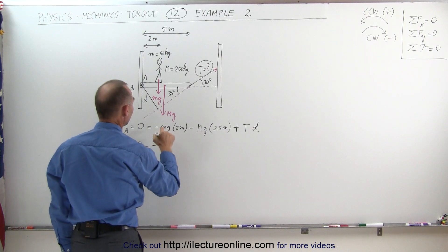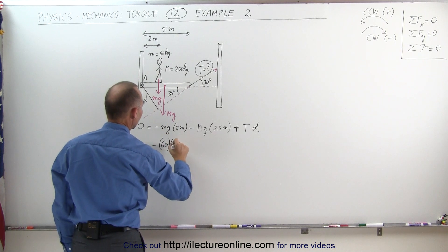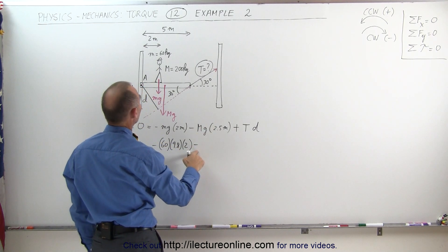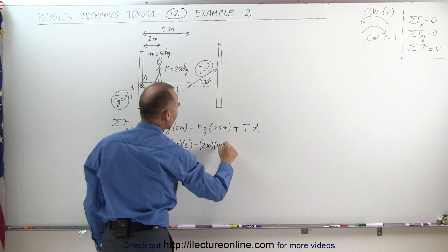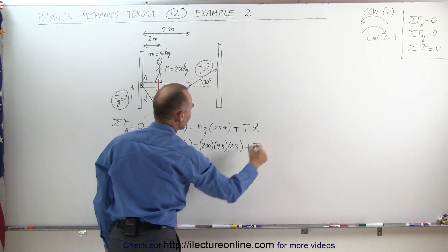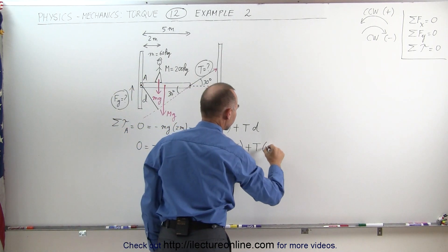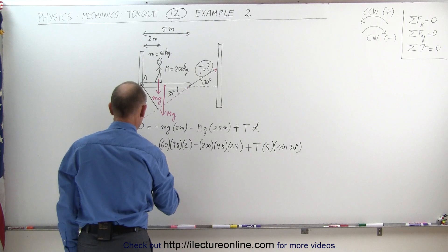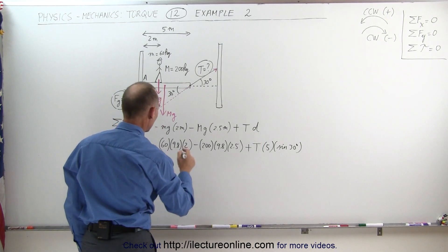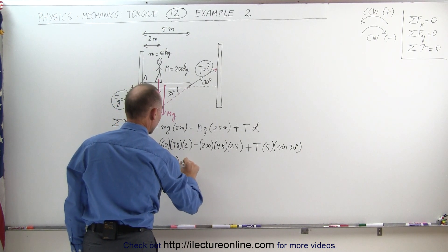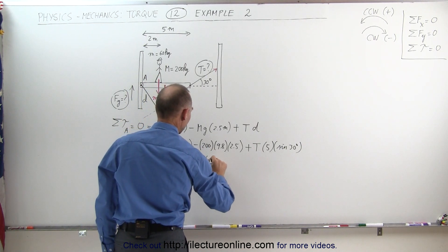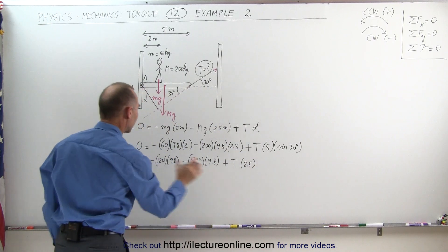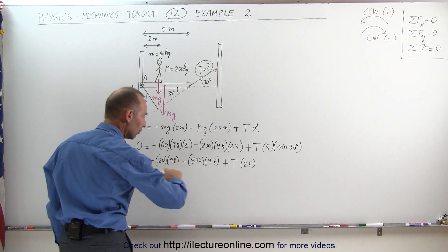Setting the sum of torques to zero: 0 = minus 60 times 9.8 times 2, minus 200 times 9.8 times 2.5, plus T times 5 times sine of 30 degrees. The sine of 30 degrees is 0.5, so 5 times 0.5 gives 2.5. Simplifying: 0 = minus 120 times 9.8, minus 500 times 9.8, plus T times 2.5. Moving terms across and dividing both sides by 2.5 to solve for T.